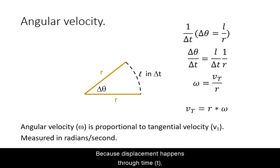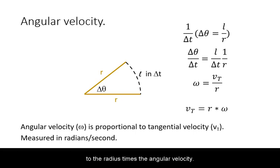Because displacement happens through time and dividing the arc length by time gives the tangential velocity, and also dividing angular displacement by time gives angular velocity, we have the relation that tangential velocity is equal to the radius times the angular velocity.